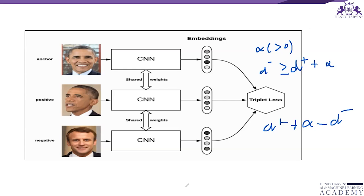With the triplet loss function, we can take the derivative of the loss with respect to the model parameters and perform gradient descent to update them. After an update, different images will be further apart in the feature space, whereas similar images will be closer in the feature space.